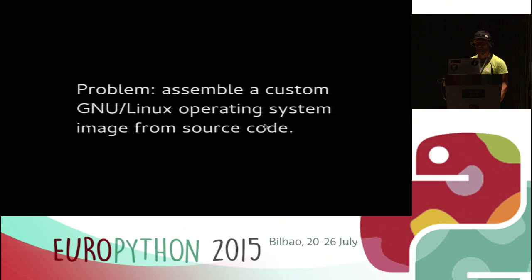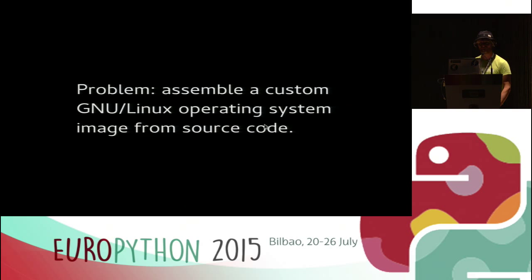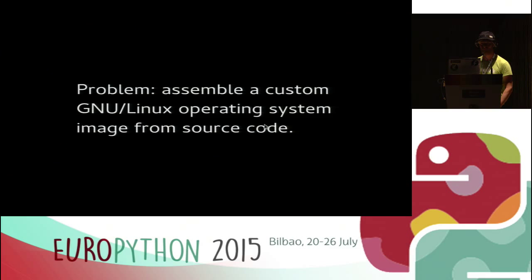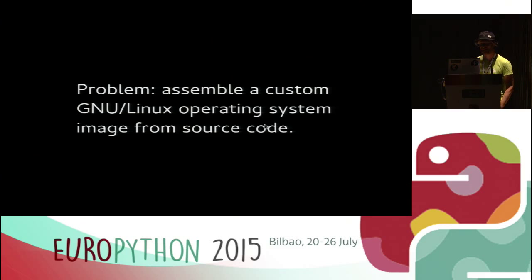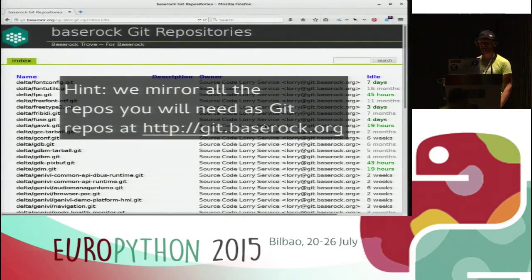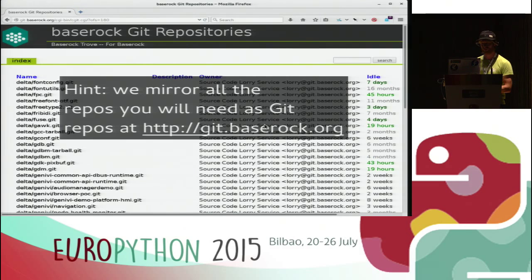The project started with this problem: build a working new Linux operating system straight from the source code. How many lines of Python code do you think it would take? The project's solution for dealing with source code is a server which mirrors every popular form of version control and mirrors tarballs, all into Git repositories on one server. So the build tool doesn't have to deal with downloading tarballs from random places - it can consider that everything's in Git.